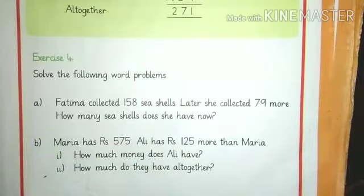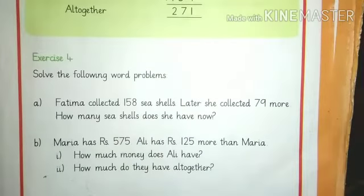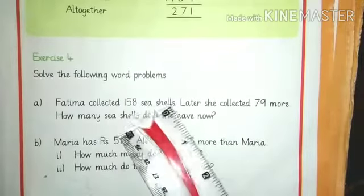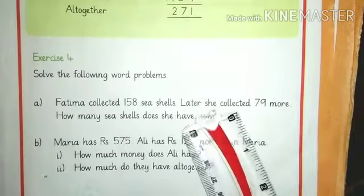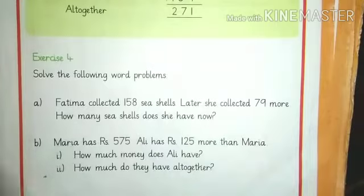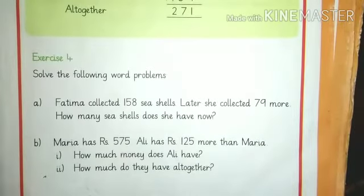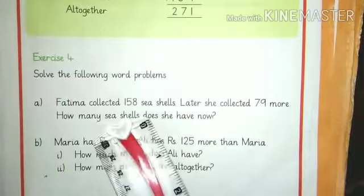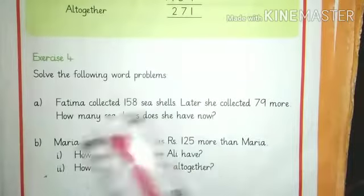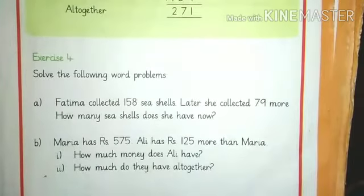Let's start number A. Fatima collected 158 seashells. Fatima ne kathi ki 158 sipi ya samandari sipi. Later she collected 79 more. Usne dubara kathi ki 79 or. How many seashells does she have now? Abhi uske paas kitni sipi ya hai?